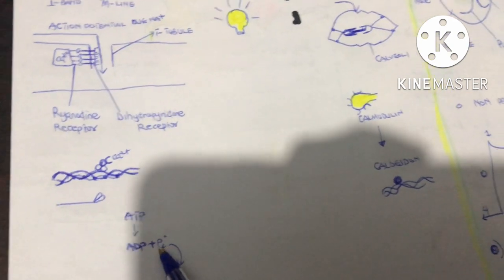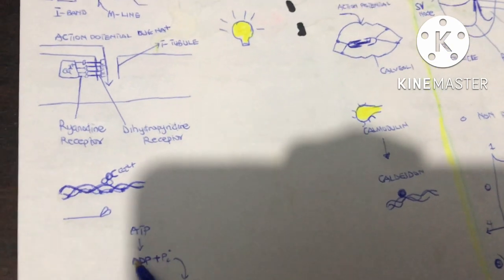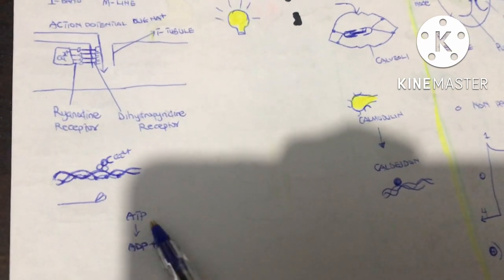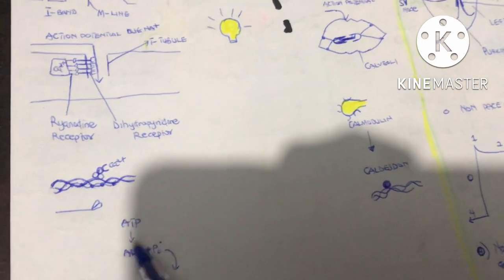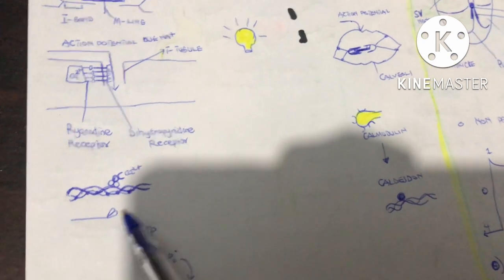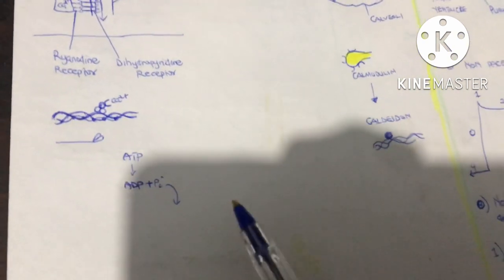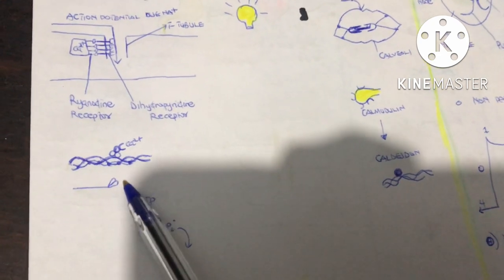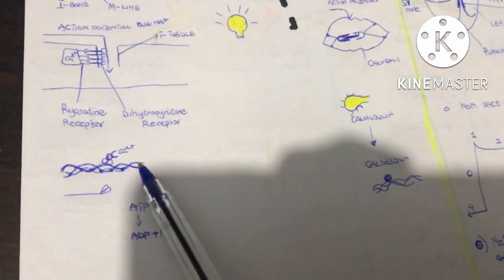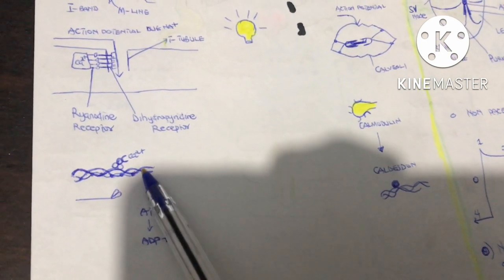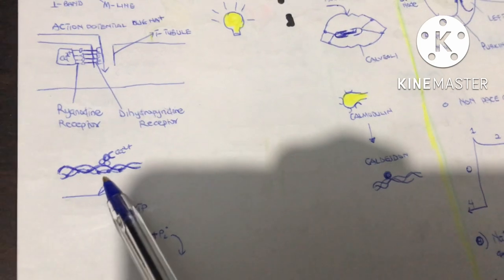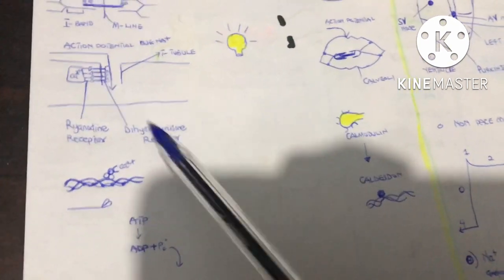When ATP is broken down to ADP and inorganic phosphate, the affinity of the head for the myosin binding site increases, so the head attaches to the binding site on actin. After attachment of the myosin head (the cross bridge), the inorganic phosphate is released, causing the power stroke — the sliding effect — which is the movement of the thin filament over the thick filament, leading to contraction.